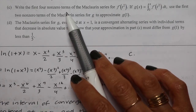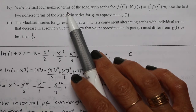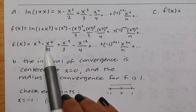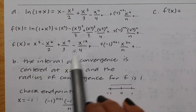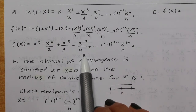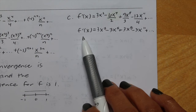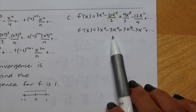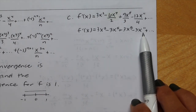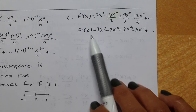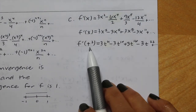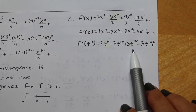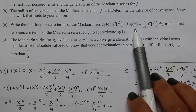For part c, we need the first four non-zero terms of the McLaurin series for f prime of t squared. Starting with f of x as x cubed minus x to the 6th over 2 plus x to the 9th over 3 minus x to the 12th over 4, we take the derivative of each term. For f prime we get 3x squared minus 3x to the 5th plus 3x to the 8th minus 3x to the 11th. Then substituting t squared for x gives 3t to the 4th minus 3t to the 10th plus 3t to the 16th minus 3t to the 22nd.